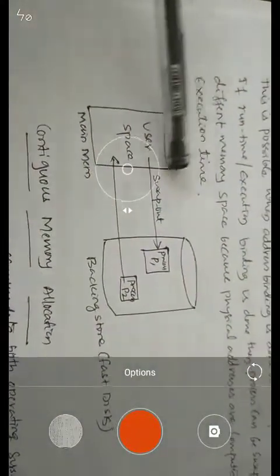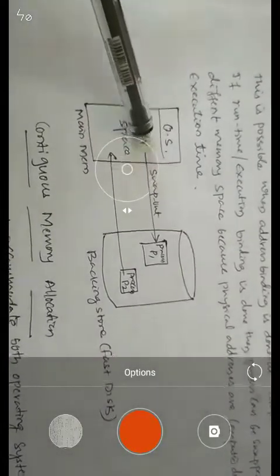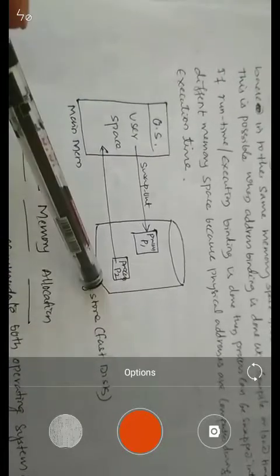On screen, the diagram shows the user space and operating system area within main memory. User processes are placed in the user area of main memory, swapped out to the backing store, and then swapped back into main memory for execution. The backing store is what we generally call a fast disk.